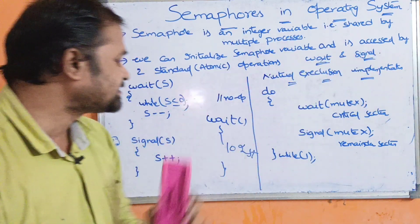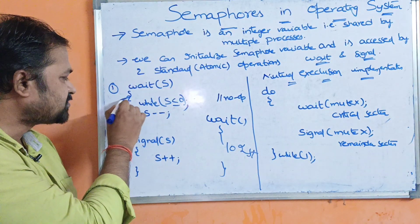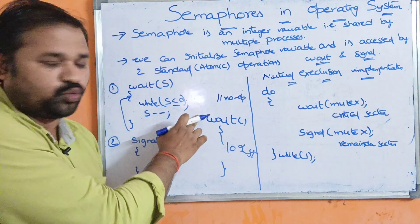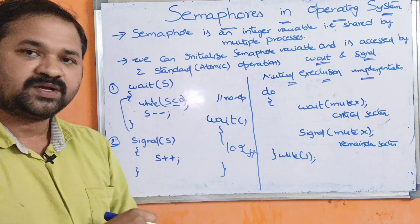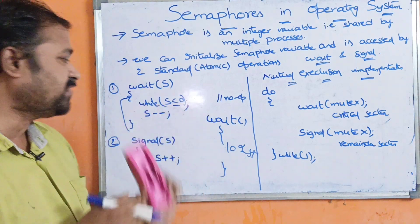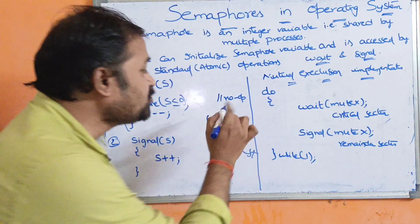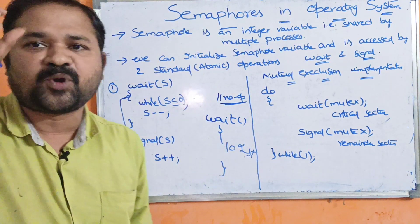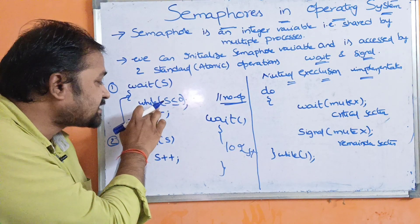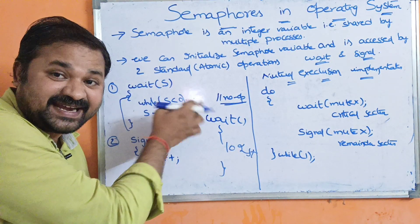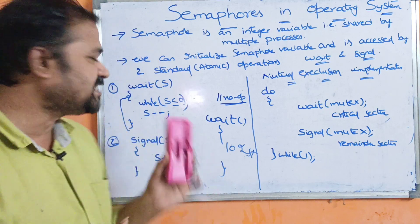Now let us see about wait and signal operations. For wait(S), where S is the semaphore variable, the code is: while S is less than or equal to 0, do nothing (semicolon). That means we first check the value of the semaphore variable. If S is less than or equal to 0, then the process will be in a waiting, blocked, or sleeping state. If S is greater than 0, then we decrement the value of the semaphore by 1.